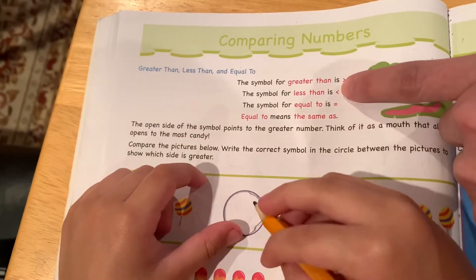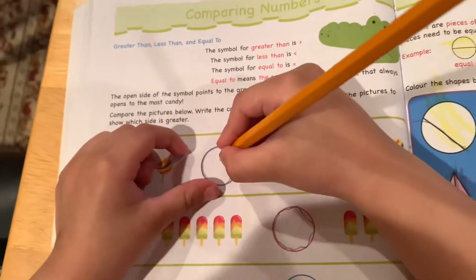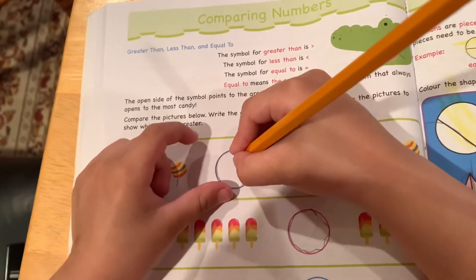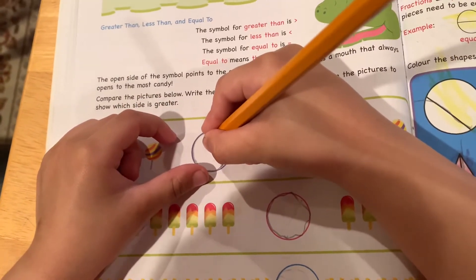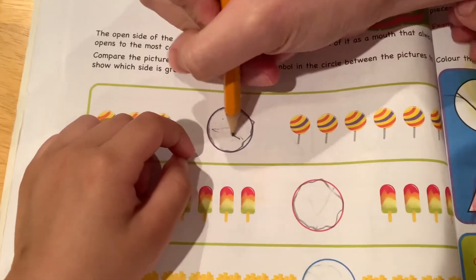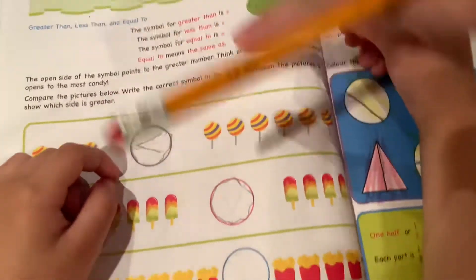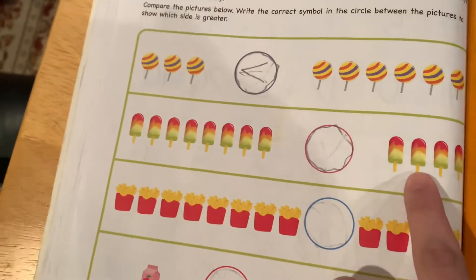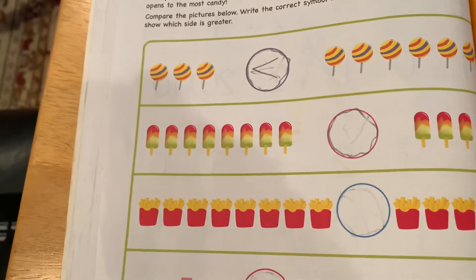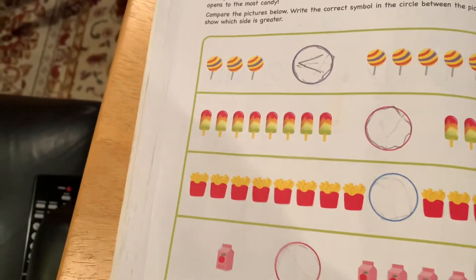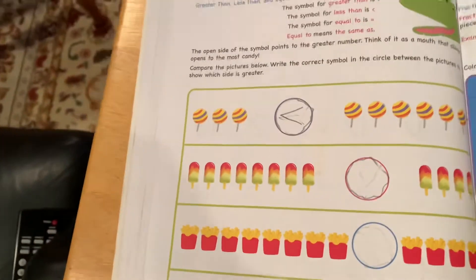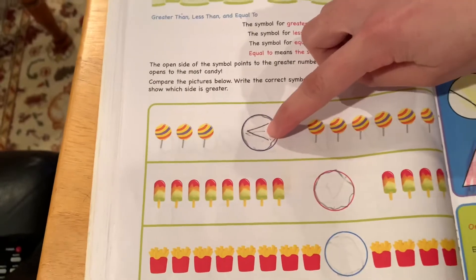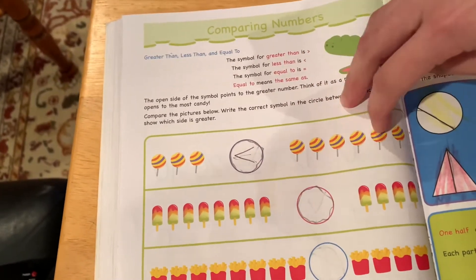It's like this, right? Can you see that symbol? Like this. Because this is more, right? Which is more candy? This one or this one? One. Okay. You put the mouth in there. Do you like that one? Look at this. The mouth is open to the more candy.